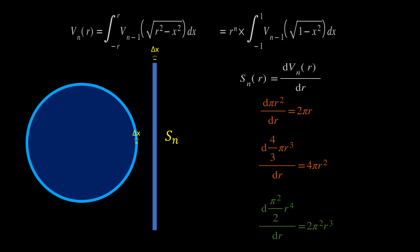That is the hyper-surface area of our four-dimensional hypersphere. You can use these formulas to get to any number of dimensions — not necessarily just four. Use the general formula for the hyper-volume of a hyperdimensional sphere to get the volume in any dimension, then differentiate it with respect to the radius to get the hyper-surface area. That's really cool.